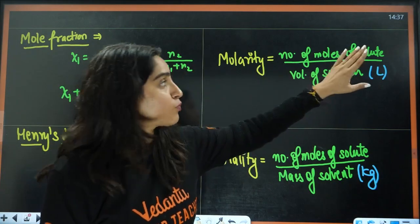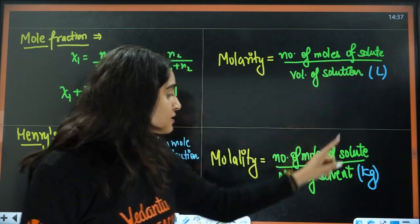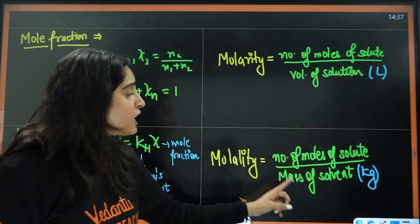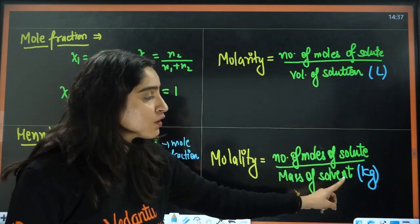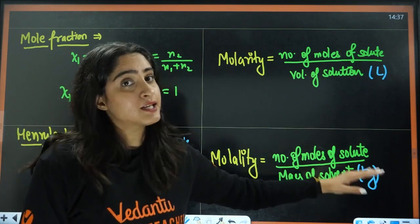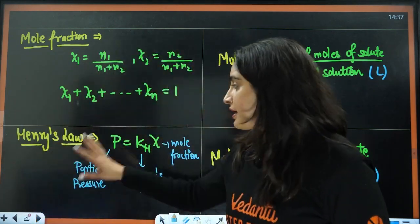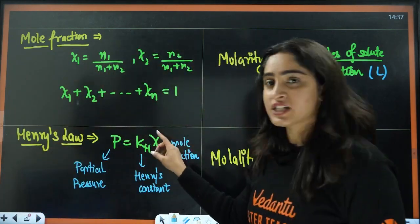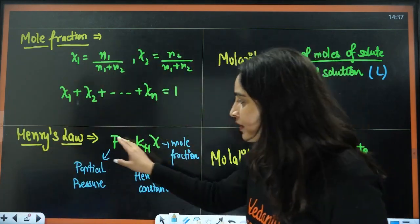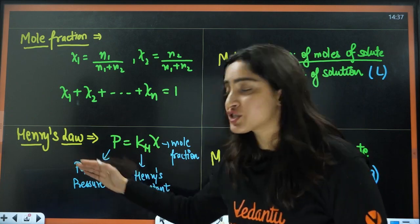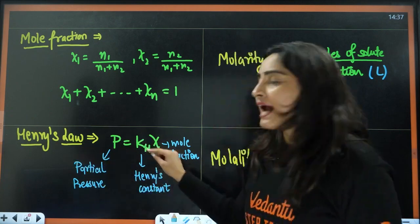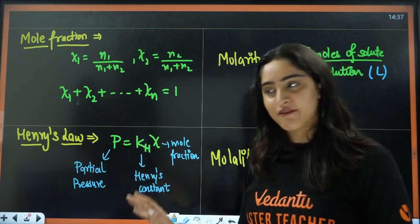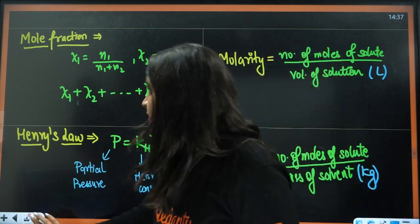Here, units are very important. Molarity uses volume in liters, and molality uses mass of solvent in kilograms. Next, we have Henry's law, where P equals K_H times mole fraction, where P is the partial pressure and K_H is Henry's constant.